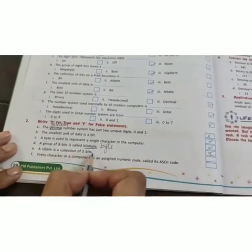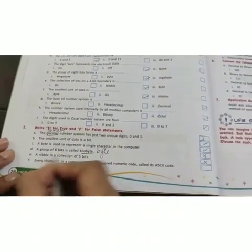A nibble is a collection of 5 bits. False. A nibble is a collection of 4 bits.